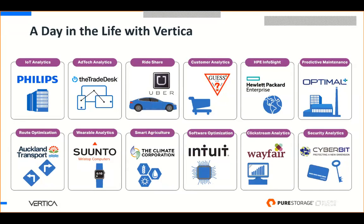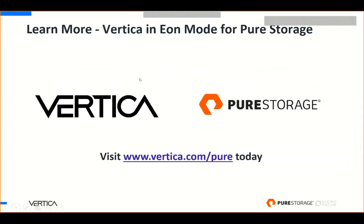To show how customers improve daily lives through analytics: IoT analytics with Philips around predictive maintenance; Trade Desk with a 500-node cluster on AWS across 10 petabytes of data to determine how ads are performing; Climate Corporation with AgriTech where farmers do analysis to determine how to gain better crop yield; and Intuit for taxes, making sure the software is optimized so customers continue using their products. They all rely on Vertica for analytics. Visit vertica.com/pure today.